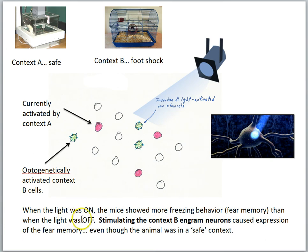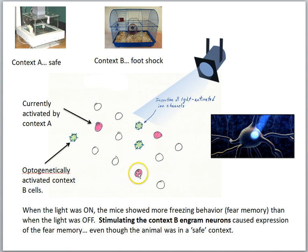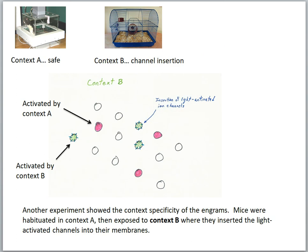When the light was on, the mice showed more freezing behavior than when it was off. Stimulating the context B engram neurons caused expression of the fear memory even though the animal was in a safe context. The A cells are currently active but carry no fear association. When the light activates the B cells — which encode the fear memory — the animal shows fear even though it is in a safe environment.